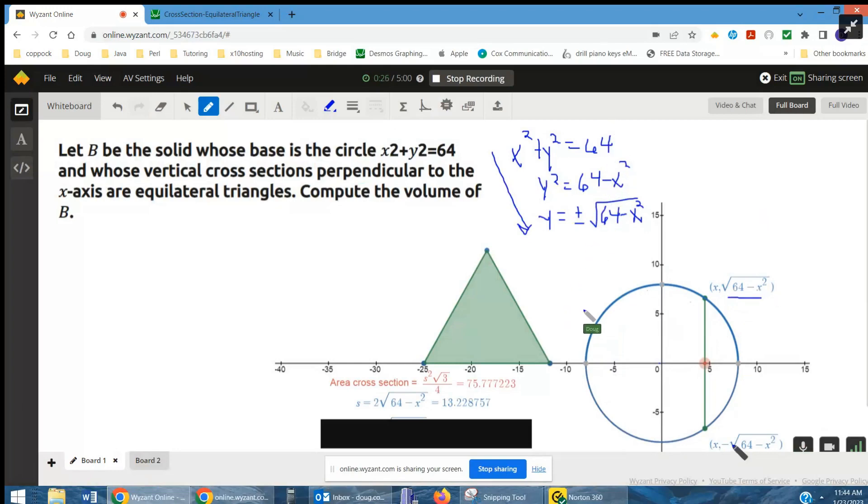And the bottom of that circle, or this semicircle, is y equals the negative square root of 64 minus x squared. So for each x between negative 8 and 8,